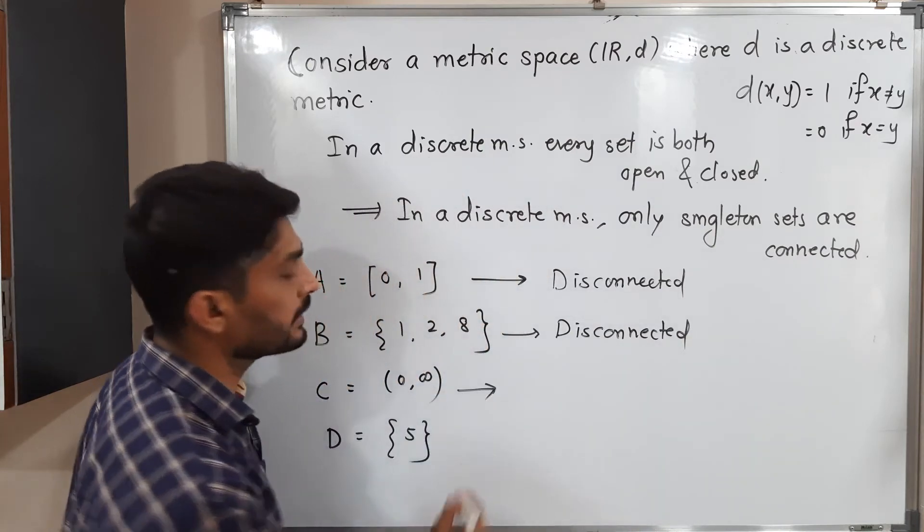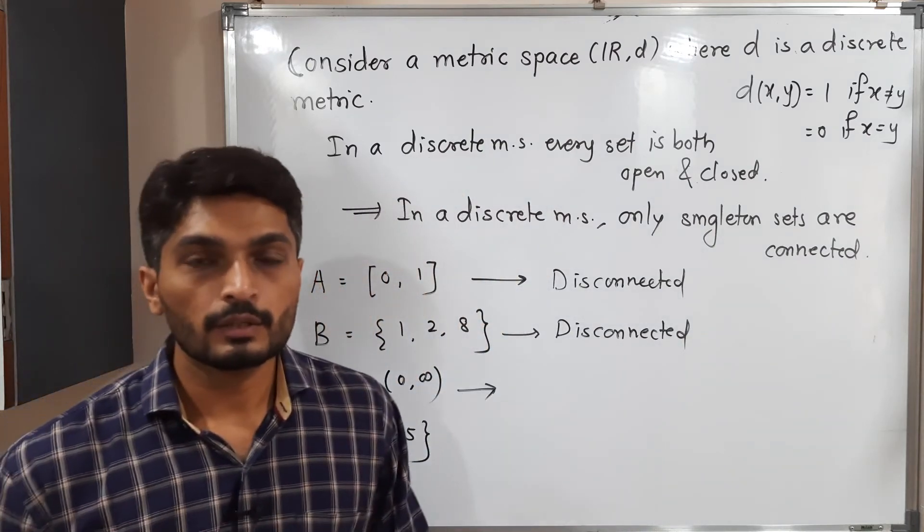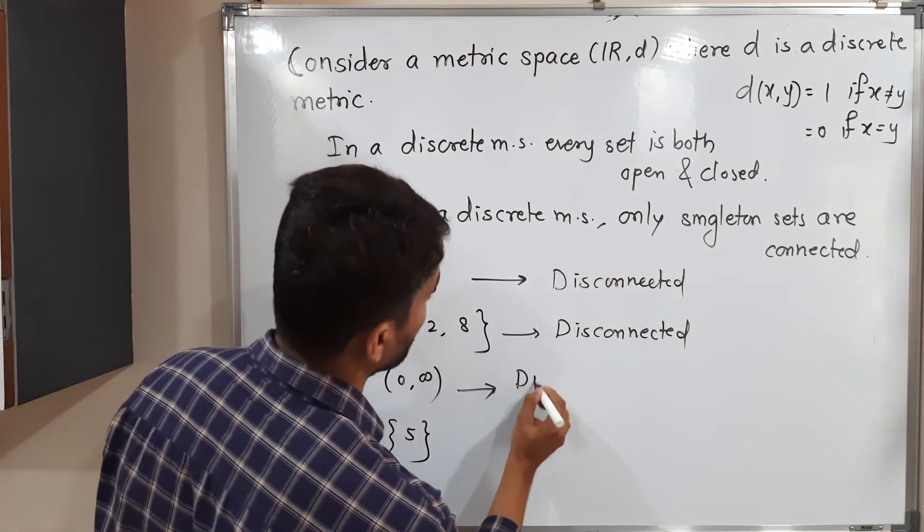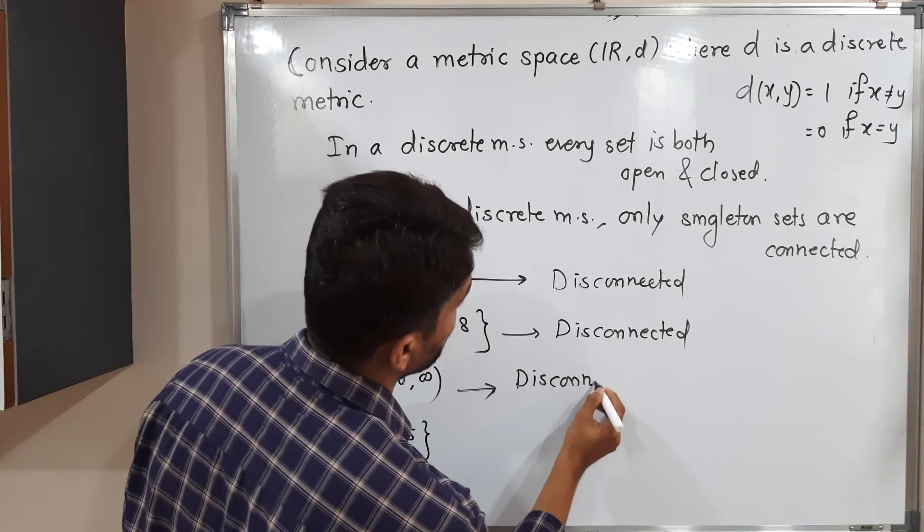Next, open interval (0, ∞) - infinite elements are there. So by this result, what can we say? This set is also disconnected.